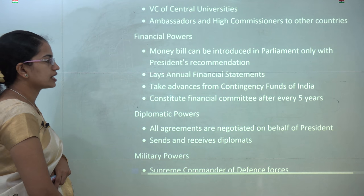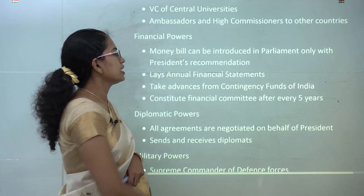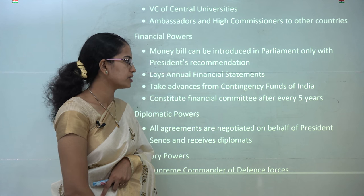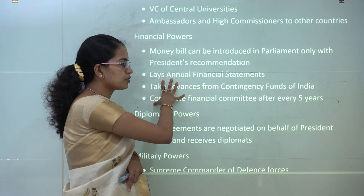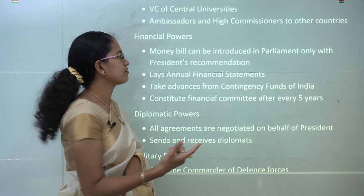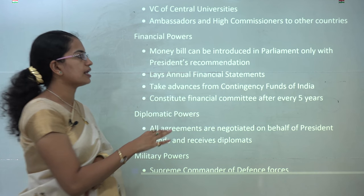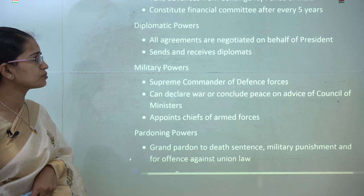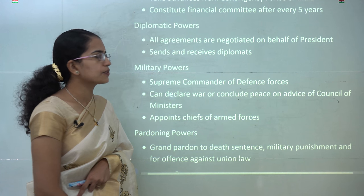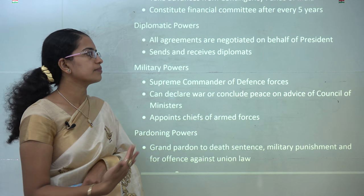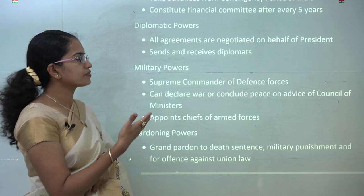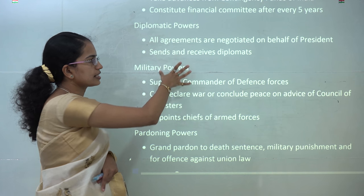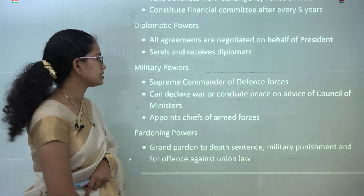Under financial power, there are three major powers: the president lays down the annual financial statement, can take advances from the Contingency Fund of India, and can constitute a finance commission after every five years. A money bill can be introduced in parliament only with the recommendation of the president. He also has numerous diplomatic powers, including the right to negotiate agreements on behalf of India, and can send and receive various diplomats in India and abroad.